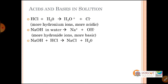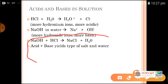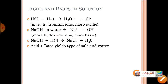When an acid and base react with each other, they form salt and water. This type of reaction is called a neutralization reaction, as we have seen in the previous class. If a strong acid and strong base react with each other, they will form a neutral salt plus water, because both neutralize each other.